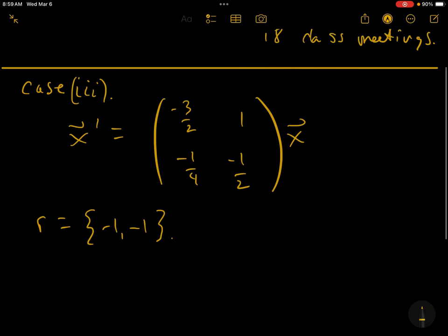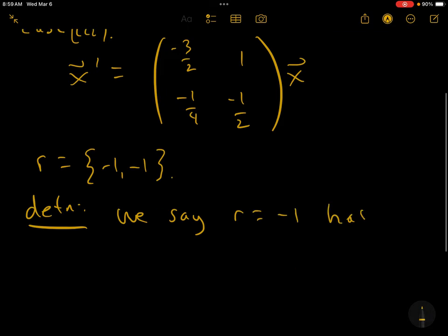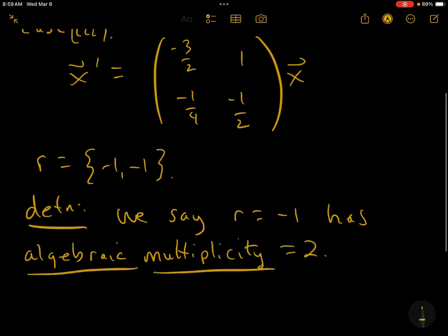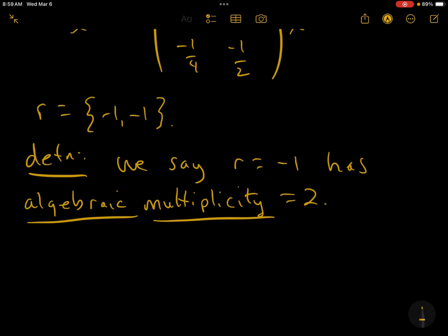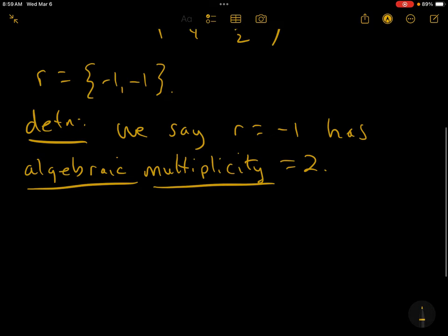So now case 3 is where we have repeated roots. Here's a definition. We say, in this case, that R equals minus 1 has algebraic multiplicity equal to 2 because it's repeated twice. If we had a 3 by 3 and R had been minus 1, minus 1, minus 1, we would say that R has algebraic multiplicity equal to 3. We're going to explore this at length after we get through this section.